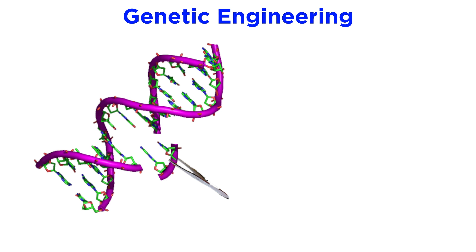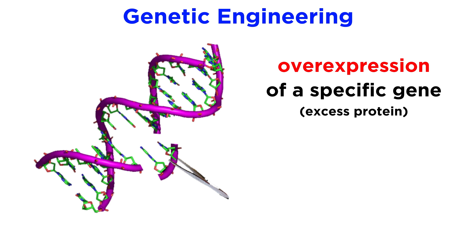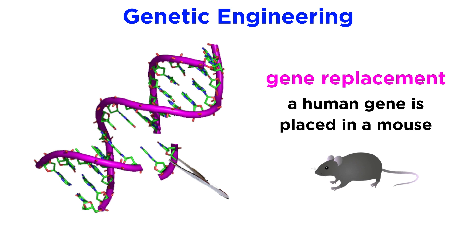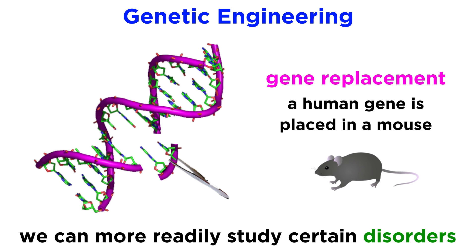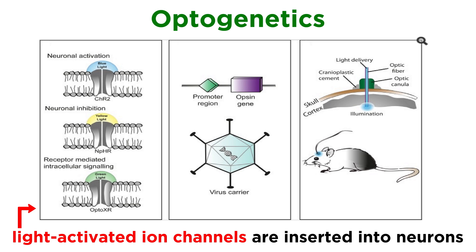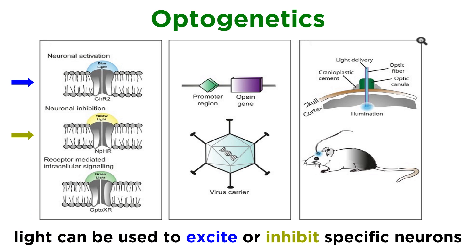Cutting edge techniques include genetic engineering. We can produce organisms that overexpress a particular gene, or even completely lack a particular gene, and thus lack the protein that would be produced when that gene is expressed. We can therefore gain clarity on the role of a particular protein in carrying out some physiological function. We can even perform gene replacement, where a human gene is placed in a mouse so as to perform studies on certain disorders. Another important technique is called optogenetics, where light-activated ion channels are inserted into neurons, and then blue or yellow light can be used to excite or inhibit specific neurons.